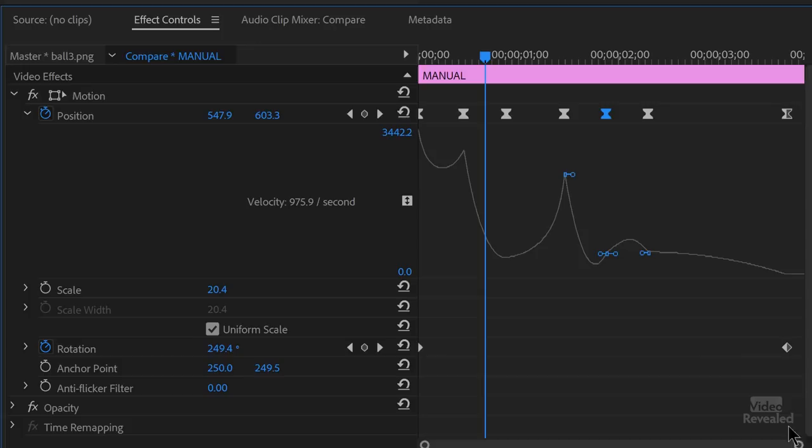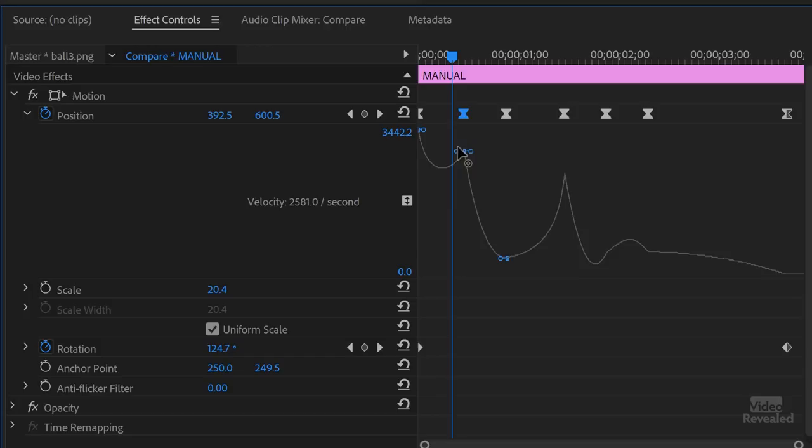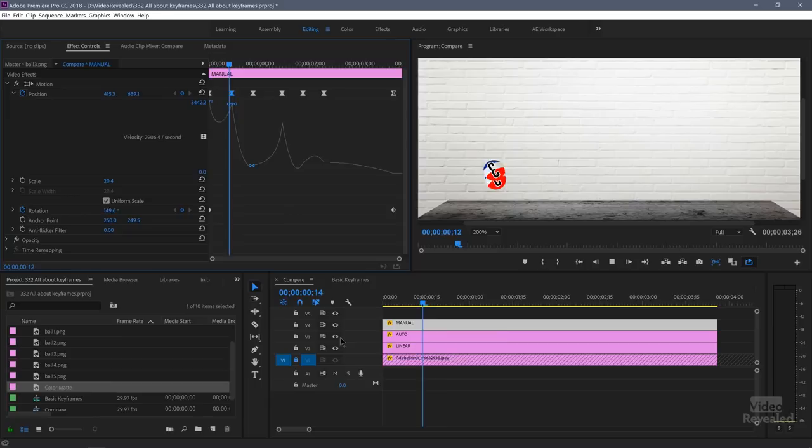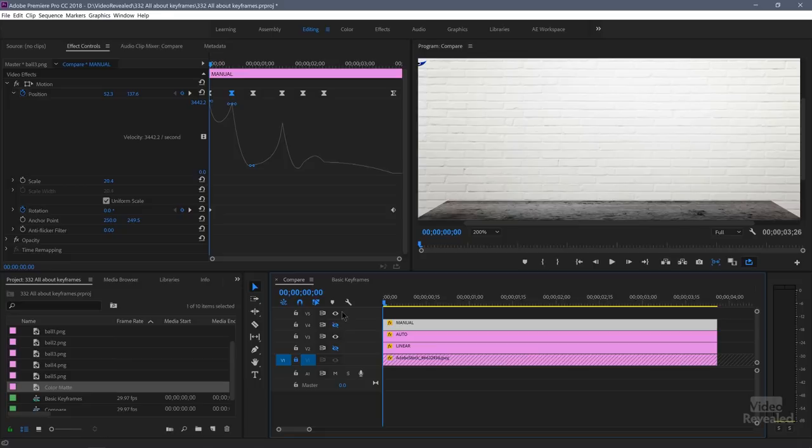So for the manual ones in here, clicking and actually changing these handles here, which is how fast that ball comes in. And you can see on the linear ones, the linear one, it's a very robotic movement. And the auto Bezier, if we twirl that down and look at it, that's what the auto one looks like.